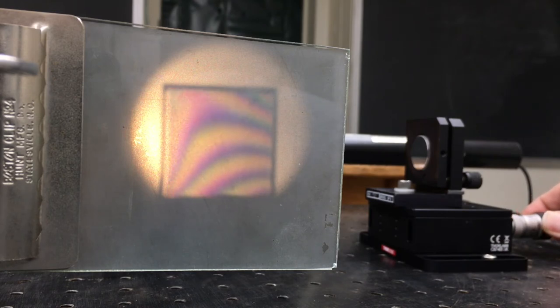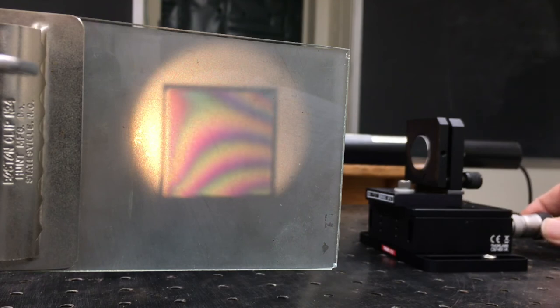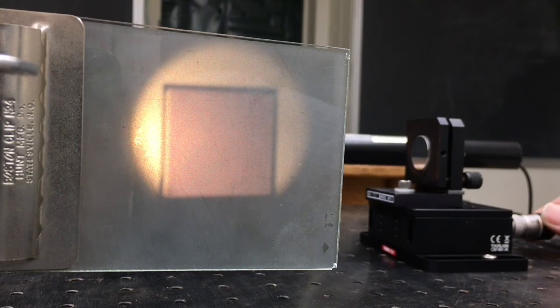We get to the position where we're at zero path length difference and then keep going and then they disappear on the other side. So the total range of motion is literally just a dozen wavelengths or so before the interference pattern disappears entirely.